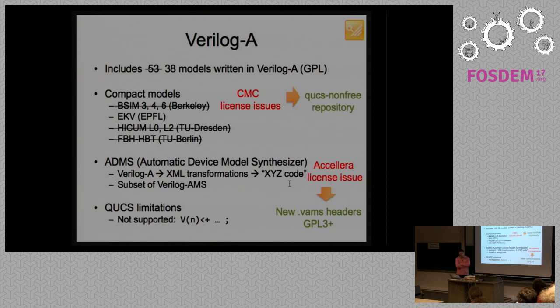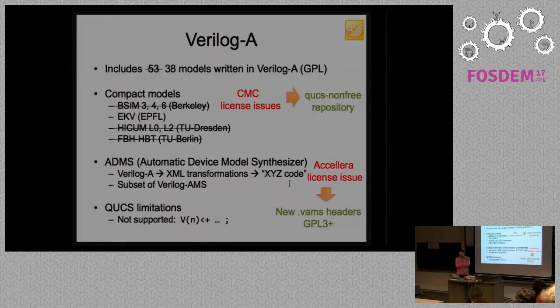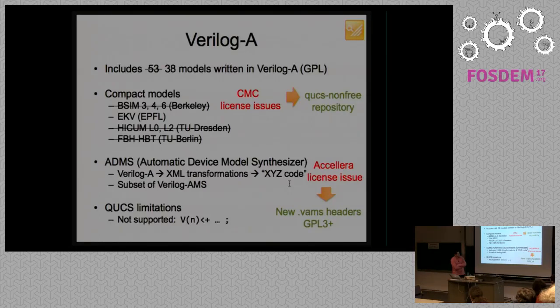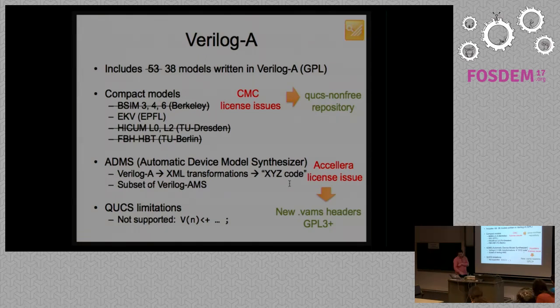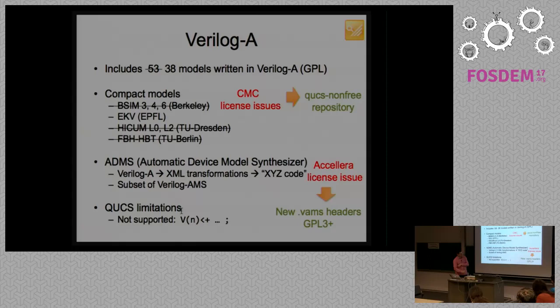Same thing with ADMS. There were headers that were proprietary to Accelera, which is the organization that handles the standard. So, me and Felix, we stripped those headers. And, we rewrote new headers. And, we relicensed ADMS as GPL 3+. Concerning Verilog A and Qucs, there is a limitation that this construct is not yet supported. But, for most things, you can compile BCM-6 and some other very complicated models. They run slowly because our engine is kind of slow. But, it runs.